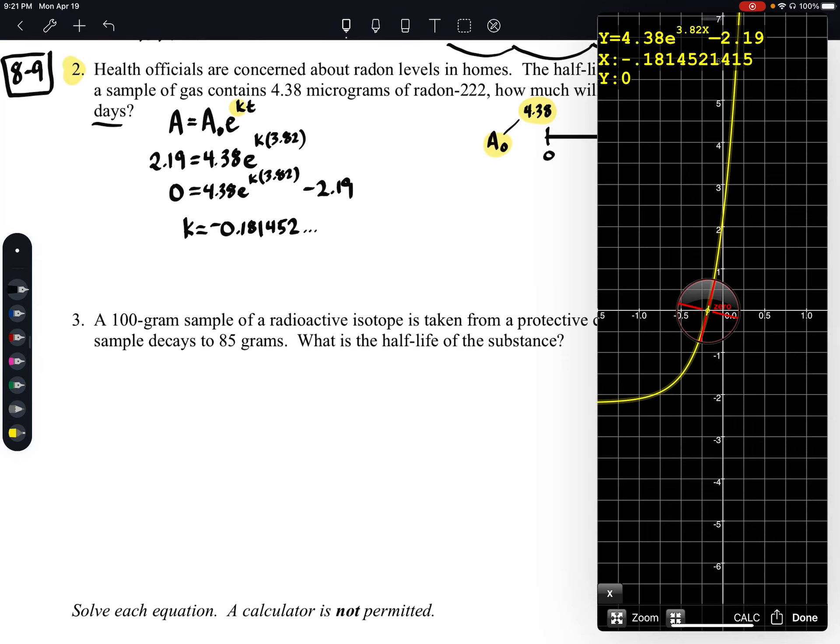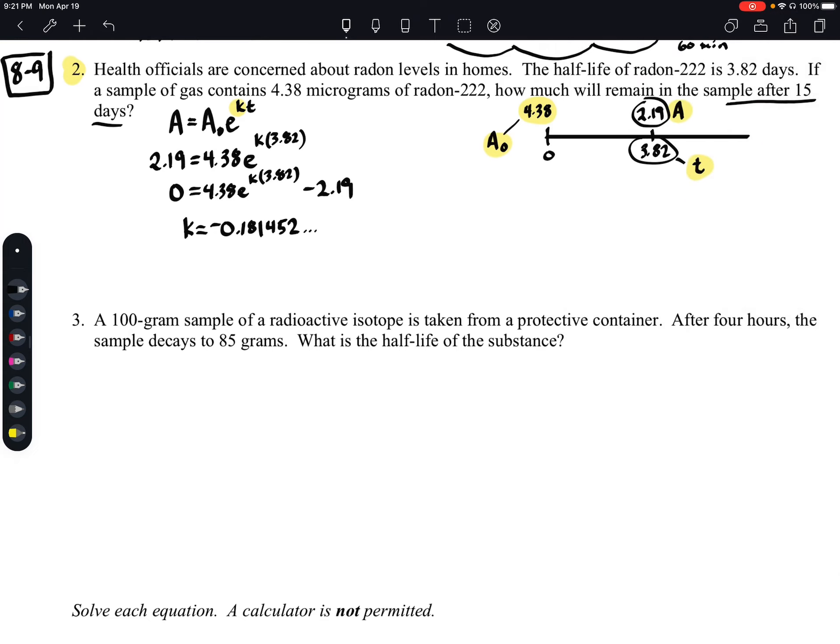All right, so now what we need to do is we need to figure out how much of our sample would remain after 15 days. So here's what our equation now looks like. We have A is equal to 4.38 times E raised to the power of negative 0.181452, right, times our time. Okay, so in this case, now we're going to substitute in that 15 for our time, and then that will give us our answer.